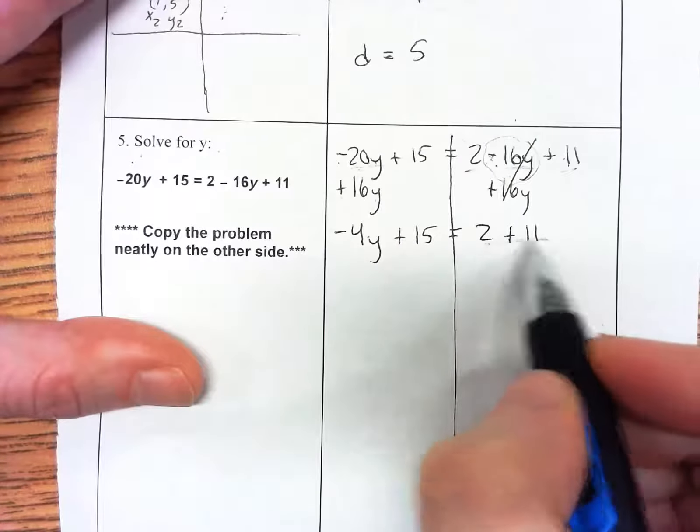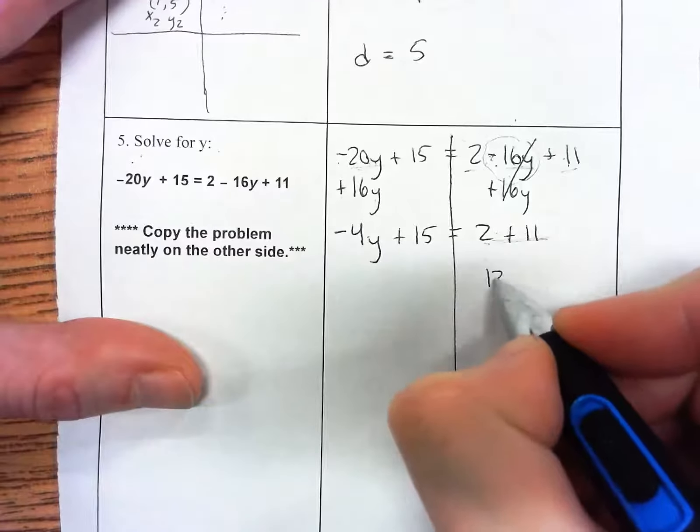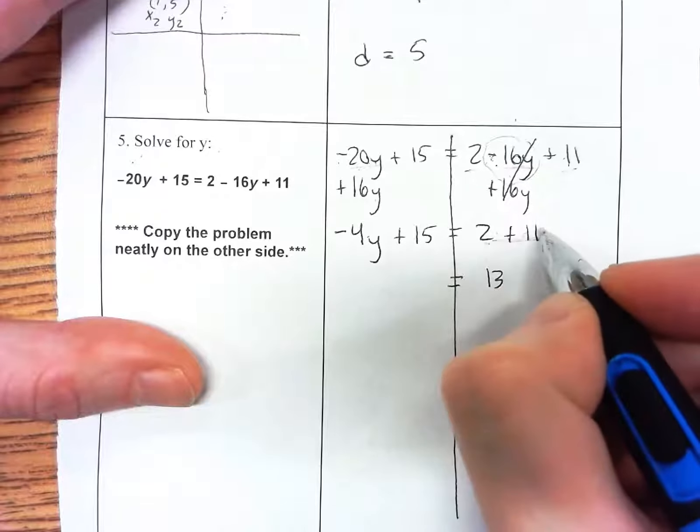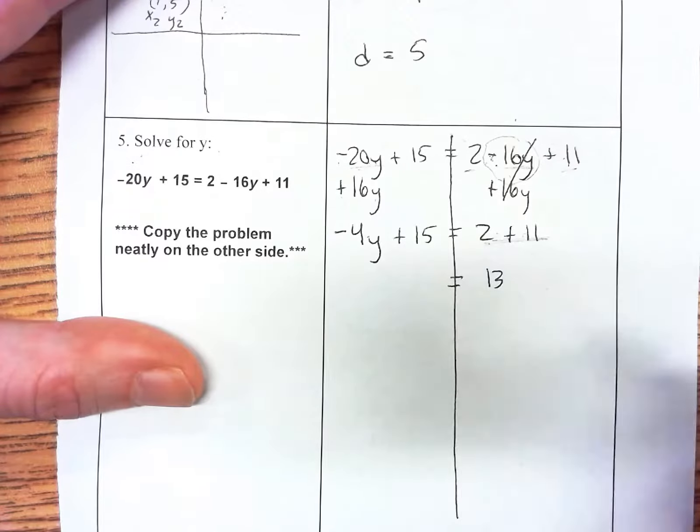Now I can combine these two next. 2 plus 11 gives us 13. I can combine them because they're the same type—they're both integers. If this had a y on the end, like 11y, we would not be able to combine it.